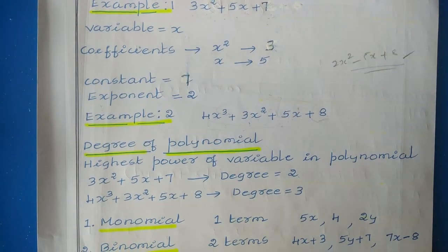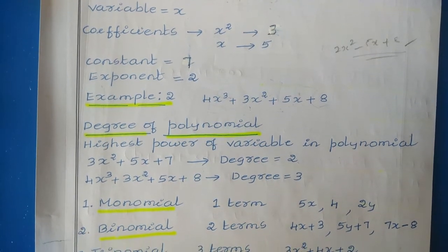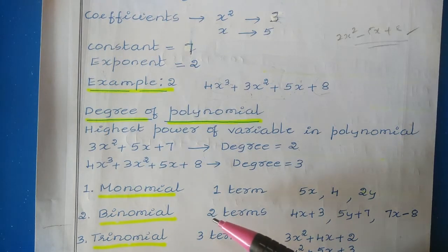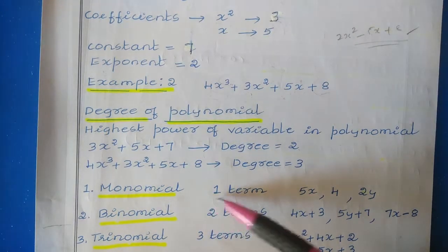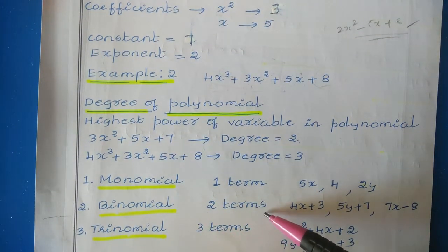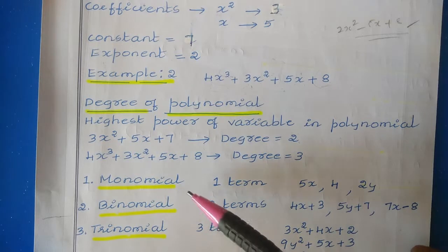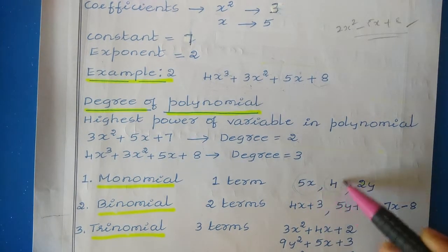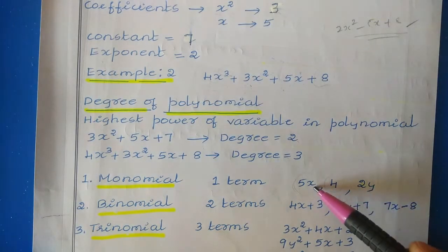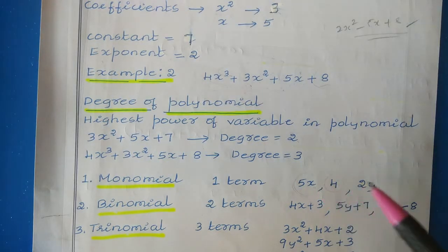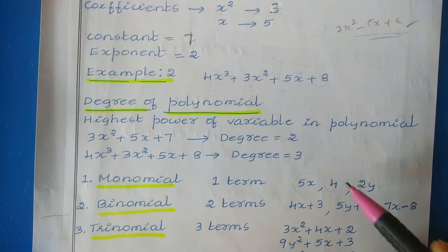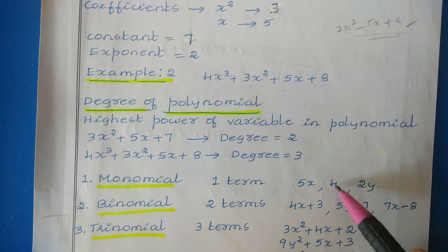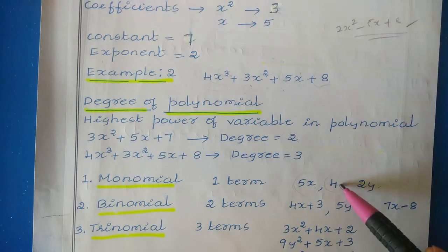Based on the number of terms, polynomials are classified into three types: monomial, binomial, and trinomial. If the polynomial has only one term it is called a monomial — for example 5x, 4, or 2y. You can use any variable name such as x, y, or z. Even a constant alone like 4 is one term and is also considered a monomial.